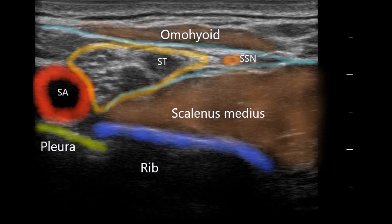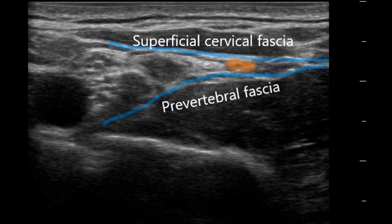This ultrasound image in the supraclavicular region shows the subclavian artery, pleura, rib, scalenus medius muscle, and supraclavicular brachial plexus. The superior trunk is seen splitting, with the suprascapular nerve separating out and traversing under the omohyoid to travel posteriorly. The suprascapular nerve, after splitting from the superior trunk, is sandwiched between the superficial cervical fascia and the pre-vertebral fascia — the injection of local anesthetic is done under the omohyoid and under the superficial cervical fascia to surround the suprascapular nerve.